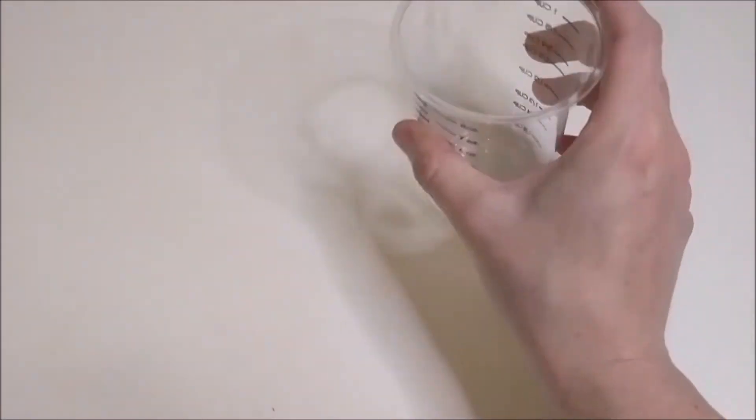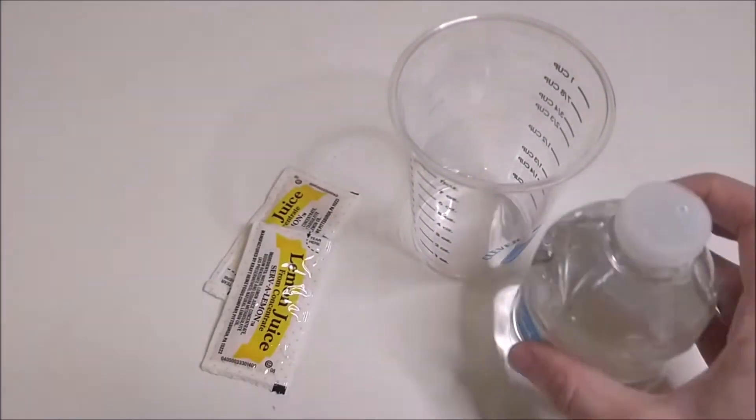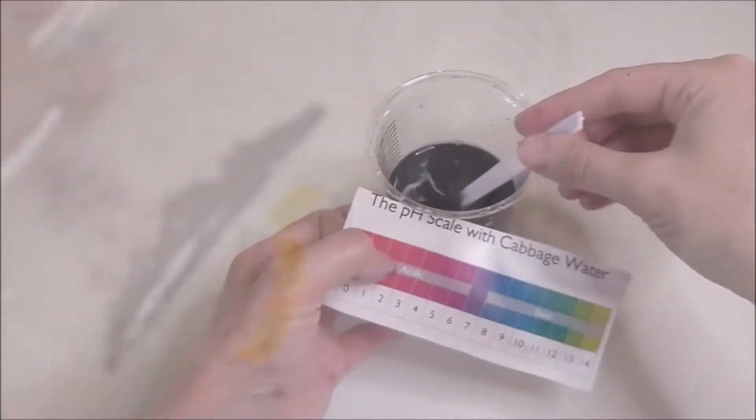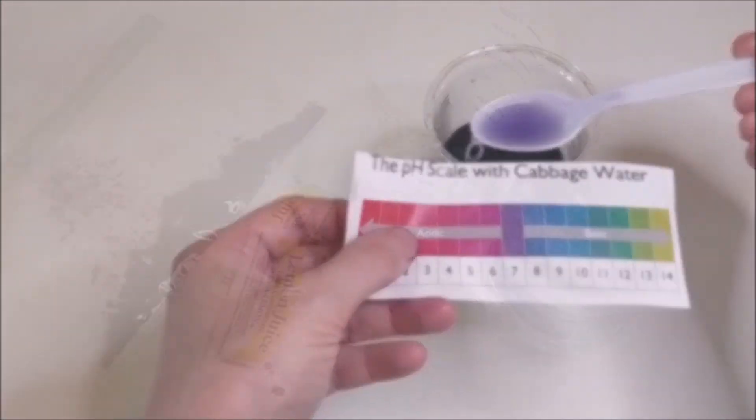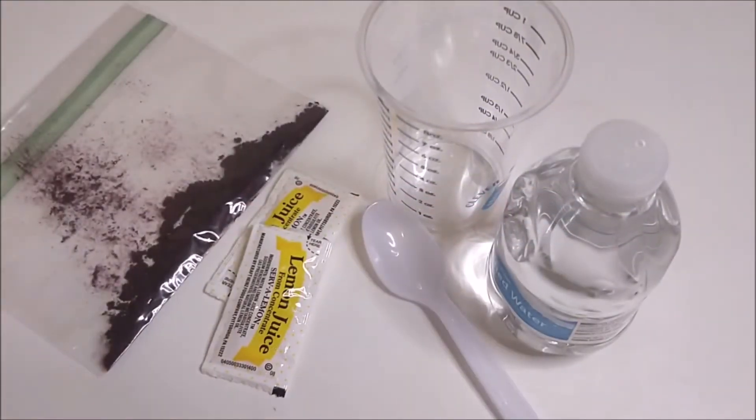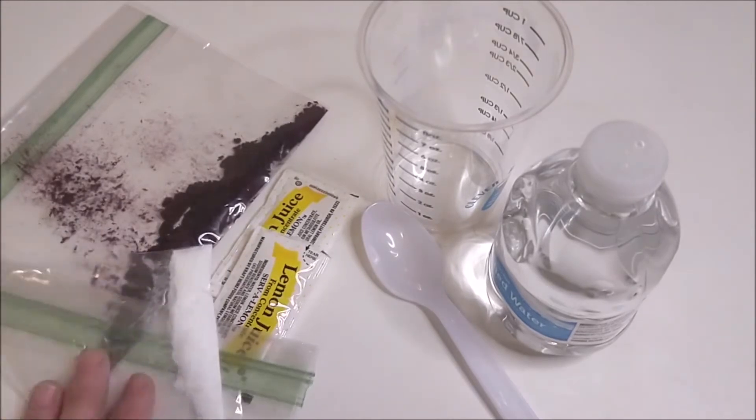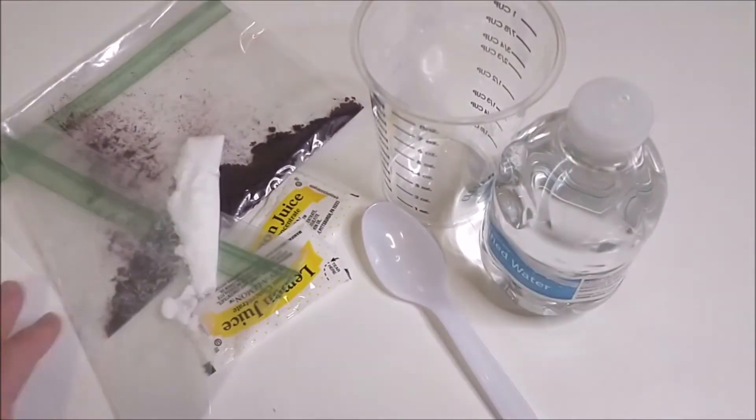In your kit, you have a measuring cup, a spoon, a bottle of water, some lemon juice, baking soda, a paper with some colored blocks on it, and some cabbage powder in a little bag. Open up your kits and get those things out now.